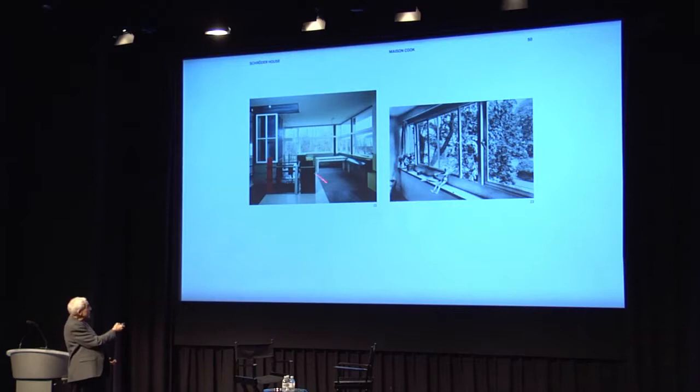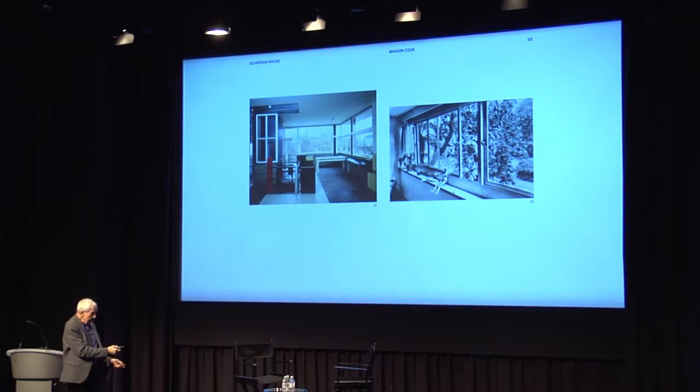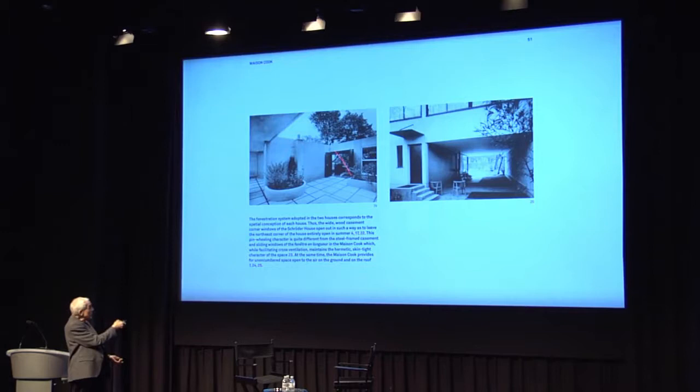There is this categoric opposition between the corner casement windows of the Schroeder House and the sliding small casements of the fenêtre en longueur. And then of course the terrace — the roof garden in the case of the Maison Cook.